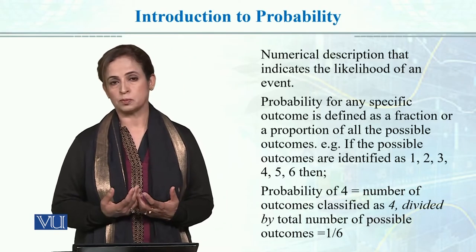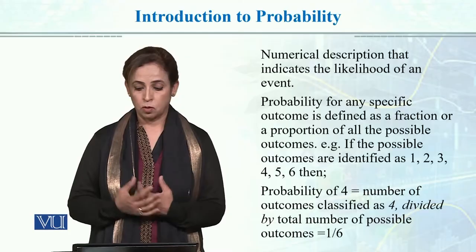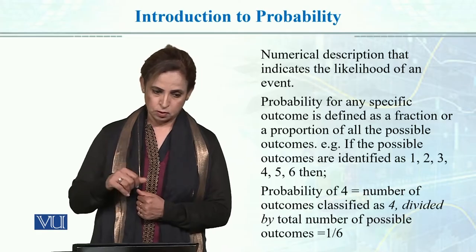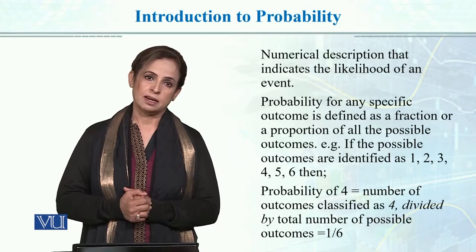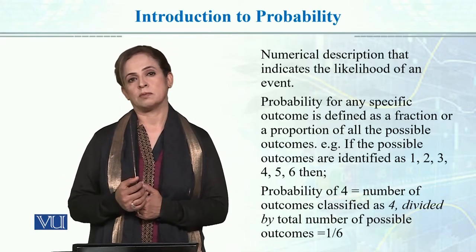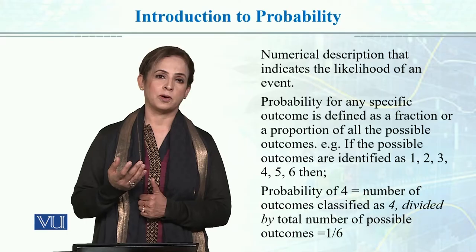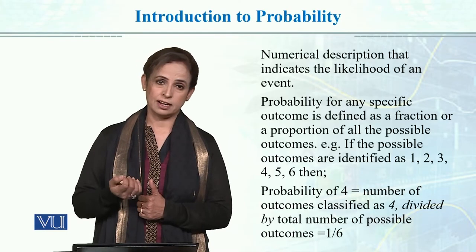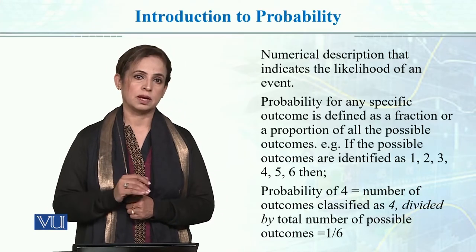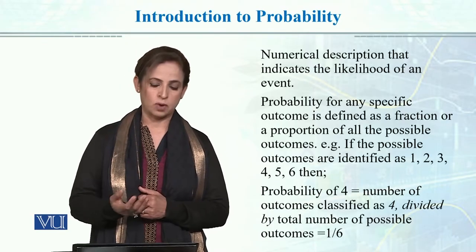This means that probabilities and proportions can be calculated when total outcomes are known. For example, if you toss a coin, all possible outcomes are a head or a tail. There is one possible successful outcome — head — and the total possible outcomes are 2. So the probability of tossing a coin and landing on heads is 1 by 2.